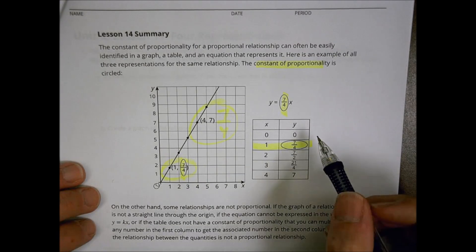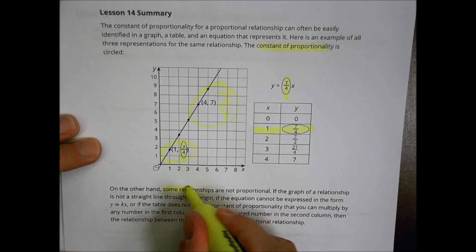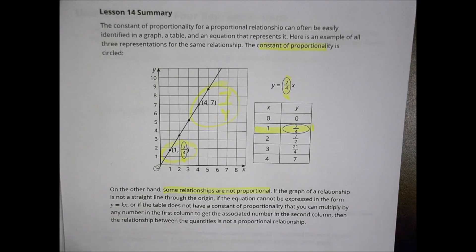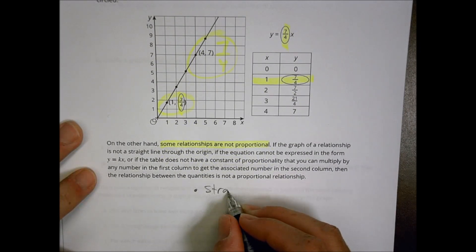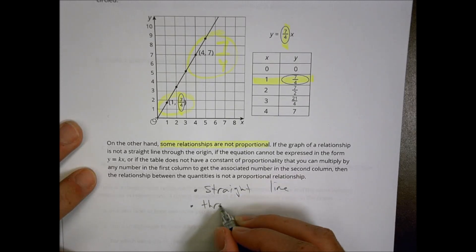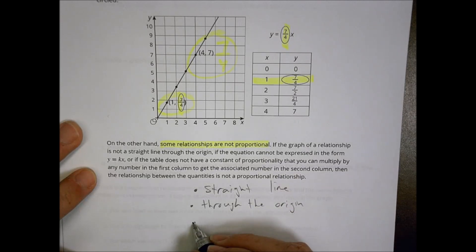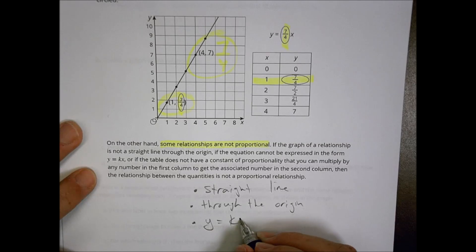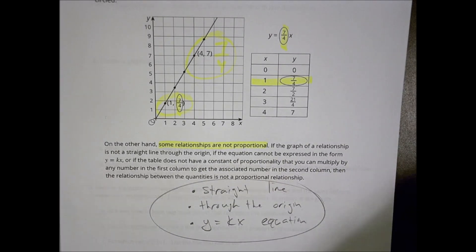The key point is that some relationships are not always proportional. If it is proportional, you'll have a straight line that goes through the origin, and you'll have a y = kx type equation. Those are the things that tell you it's a proportional relationship.